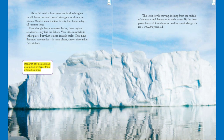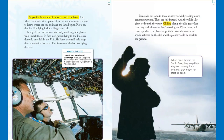Icebergs can be as small as a piano or larger than a small country. This ice is slowly moving, inching from the middle of the Arctic and Antarctica to their coasts. By the time pieces break off into the ocean and become icebergs, the ice is 100,000 years old. People fly thousands of miles to reach the poles, and when the winds kick up and blow the snow around, it's hard to know where the sky ends and the land begins. Pilots say that it's like flying inside a ping pong ball.